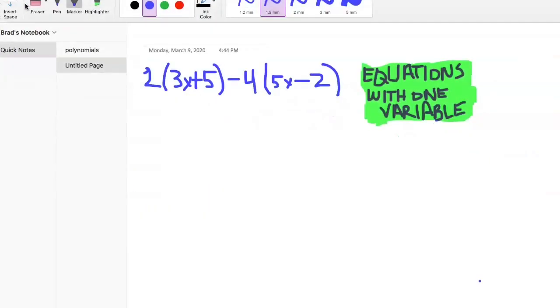Let's take a look at equations with one variable. The variable is X and what we need to know is how to use distributive property here. We're gonna do 2 times 3x plus 2 times 5, minus 4 times 5x and 4 times negative 2.